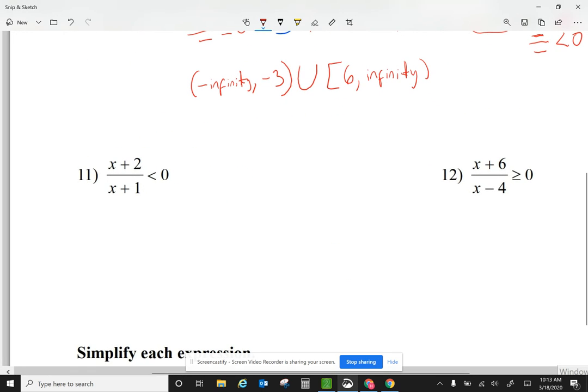Let's take a look at number 11 now. I'm looking for what are the values of x that make the top equal to 0. What's the value of x that makes the bottom equal to 0 on a number line when I write it from small to large.